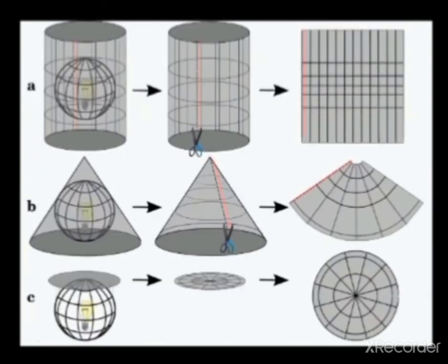The point here is: if you place a cylinder on the earth, you place a light in the middle, you light it. The shadow that it would cast on the paper — that is your projection. So you cut the cylinder, you open it, and that is your cylindrical projection.